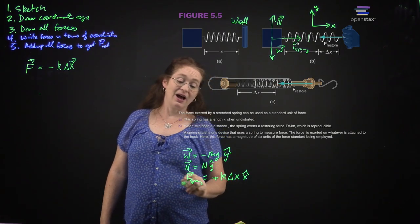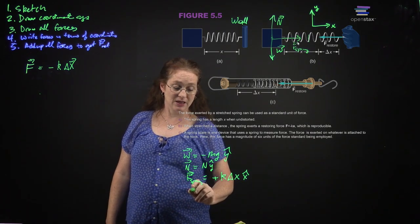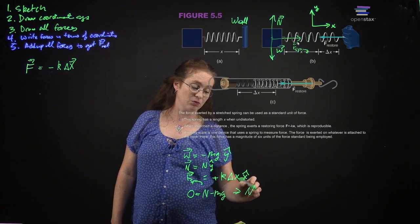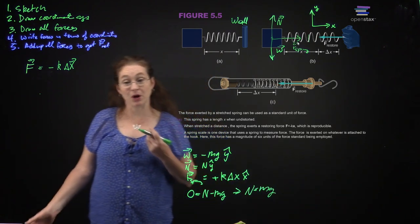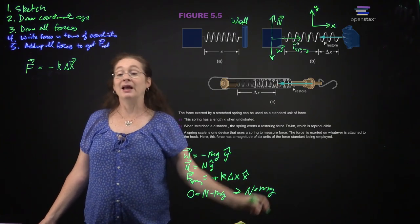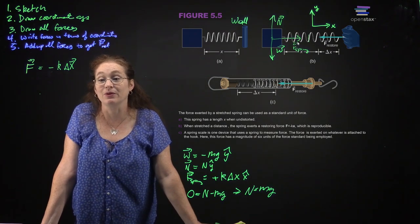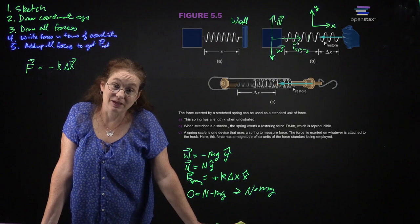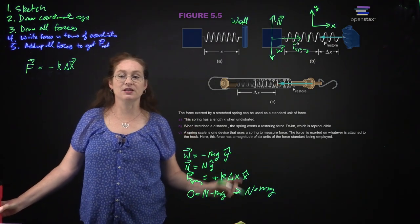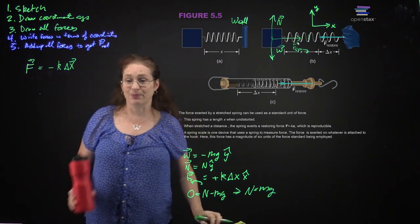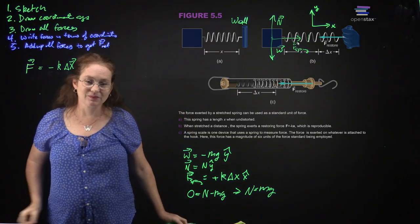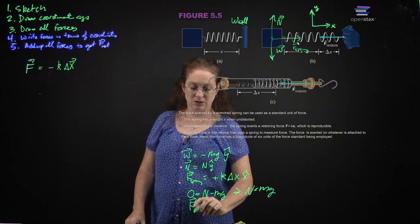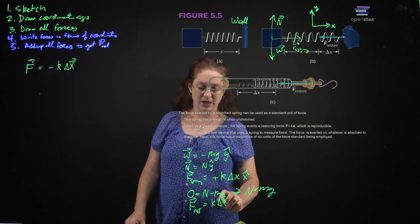These are my net forces. Taking y-components separately: N minus mg equals zero, so the normal force equals mg. A common mistake is assuming N always equals mg — we had an example with the inclined plane where N equaled W cosine theta, not mg. You can't memorize physics; you have to use your brain. The net force in this case is k delta x x-hat.